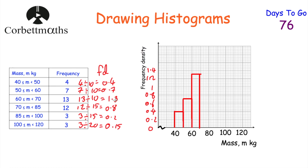The next bar is between 70 and 85 with a frequency density of 0.8 — so we go from 70 up to 0.8 and across to 85, which is halfway between 80 and 90. The next is from 85 to 100 at a height of 0.2. And the last bar is from 100 to 120 at a height of 0.15 — three-quarters of the way up between 0.1 and 0.2. And that's our second histogram complete.